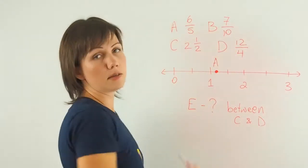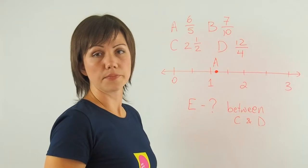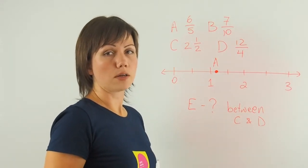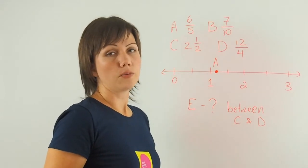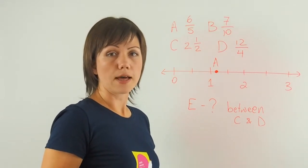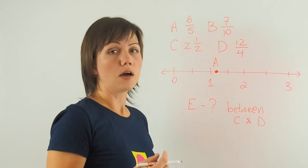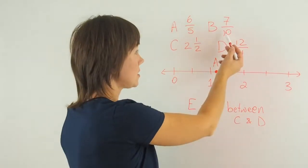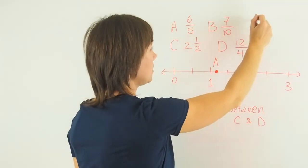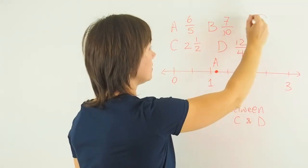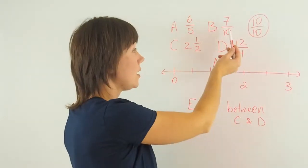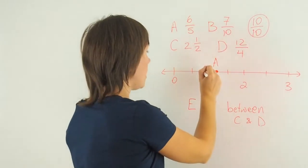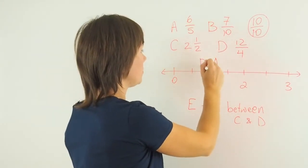Point B is a simple fraction, 7 over 10. 7 over 10 is less than one whole. How do I know that? Because I can always represent one whole as a fraction of the same number in the numerator and the denominator. In this case, it would have to be 10 over 10. That's my whole. But I don't have 10 over 10. I have 7 over 10. So it's just under 1. So that's my point B.